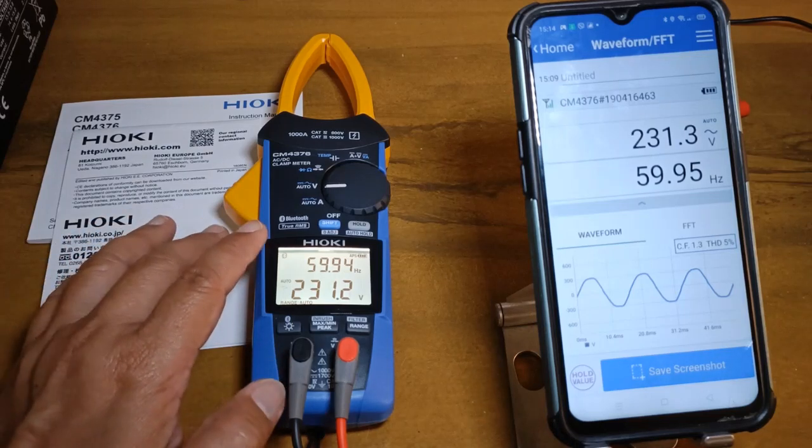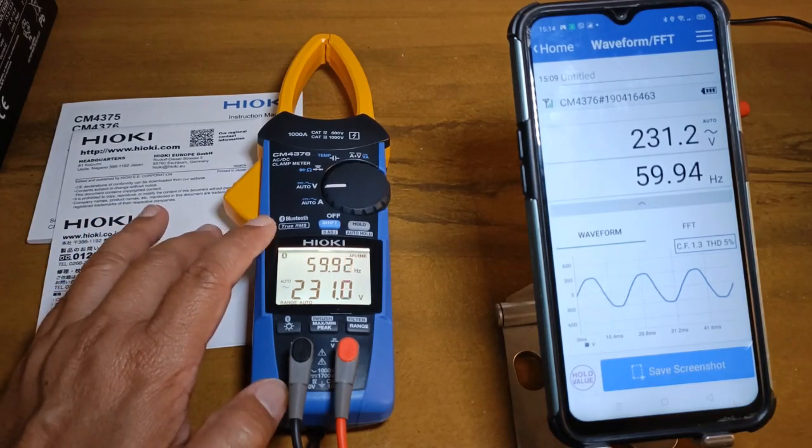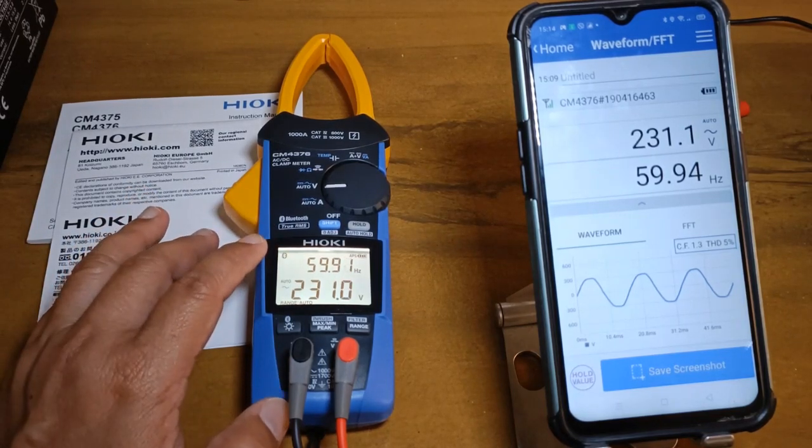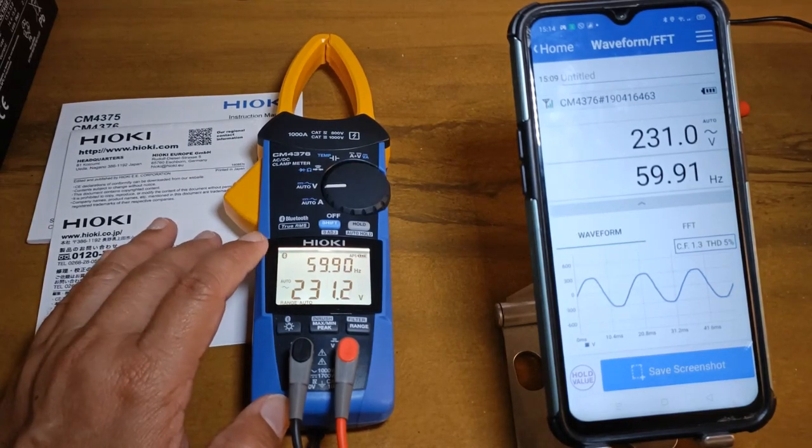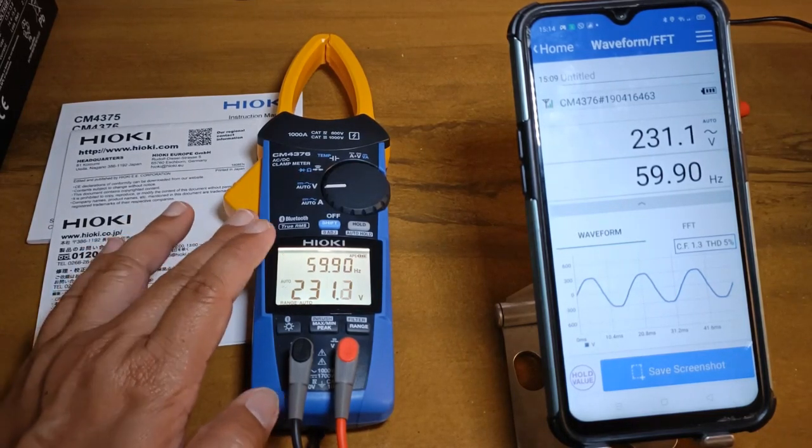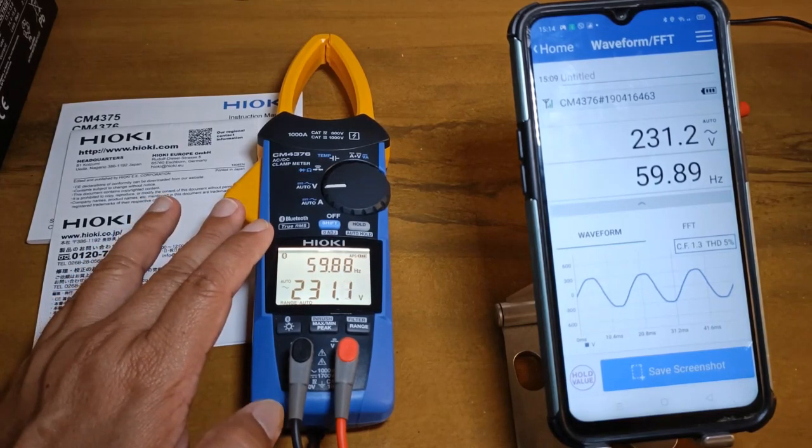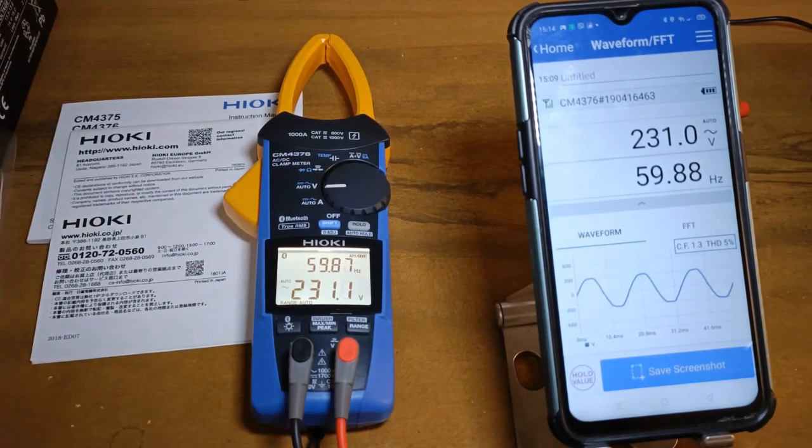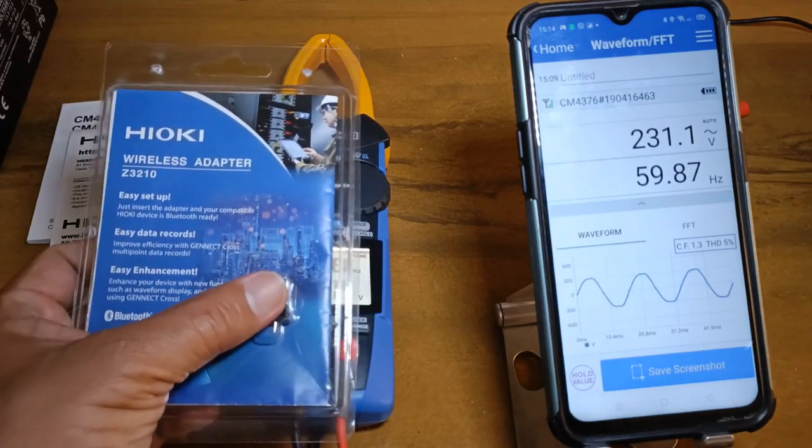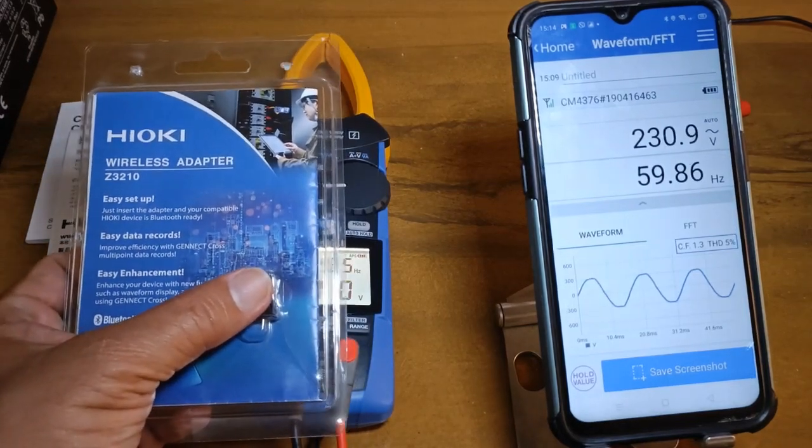That being said, the built-in Bluetooth adapter of the 4376 is more than enough if all you need is the Genect Cross App. But of course if you are looking for the newer model you should really consider the 4375-50 and the Hioki wireless adapter Z3210 together with it.